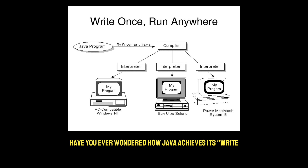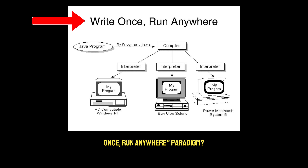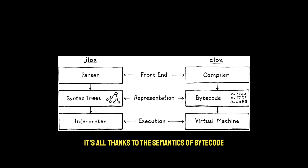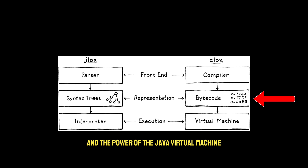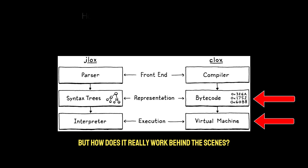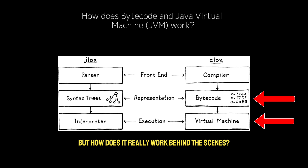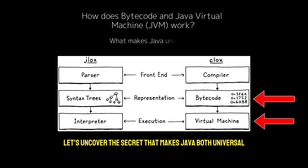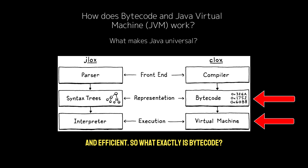Have you ever wondered how Java achieves its write-once, run-anywhere paradigm? It's all thanks to the semantics of bytecode and the power of the Java Virtual Machine. But how does it really work behind the scenes? Let's uncover the secret that makes Java both universal and efficient.